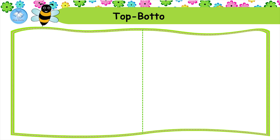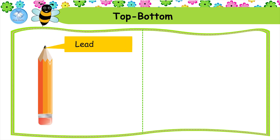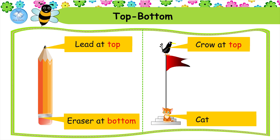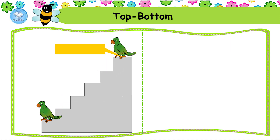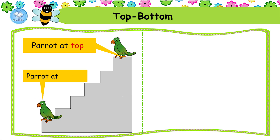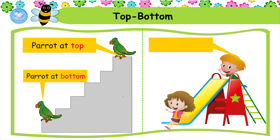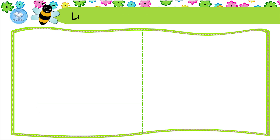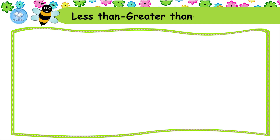Top and bottom. Leaf at top, eraser at bottom. Crow at top, cat at bottom. Parrot at top, parrot at bottom. Boy at top, girl at bottom.